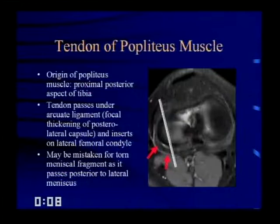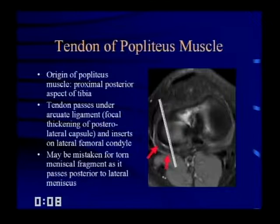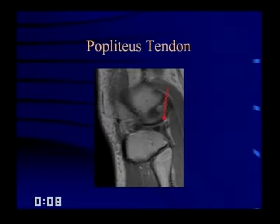The popliteus tendon can mimic a tear on occasion. The muscle originates along the posterior aspect of the proximal tibia, sends its tendon around the posterolateral corner of the lateral meniscus, and inserts on the femoral condyle. On a sagittal slice through the meniscus that also catches the popliteus tendon, it may look like a tear. The key is to follow it down and recognize it as part of the popliteus muscle.